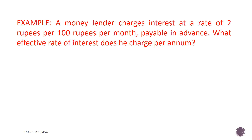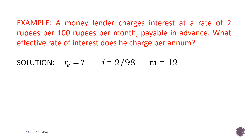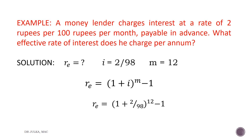In this example, a money lender charges interest at the rate of rupees 2 per 100 rupees per month, payable in advance. We want to find what effective rate of interest he charges per annum. Here i is 2 divided by 98, because the interest of 2 rupees is paid in advance and only 98 rupees are actually used. If the 2 rupees were paid at the end of the month, i would be 2 divided by 100. Since it is paid in advance, i equals 2 by 98, and m equals 12 as interest is compounded monthly. We apply the formula Re equals 1 plus i, whole raised to the power m, minus 1, with i equal to 2 by 98 and m equal to 12.